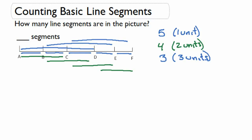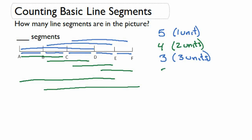And how many are there that are four units long? Here we can start at A and go all the way down to E. Or we could start at B and go all the way to F. So we have two that are four units long.